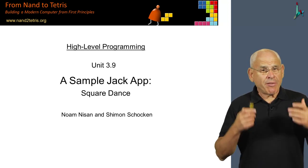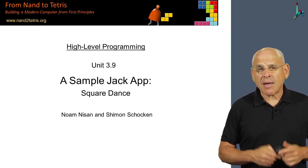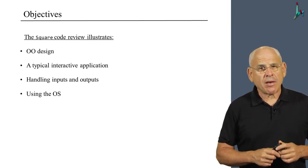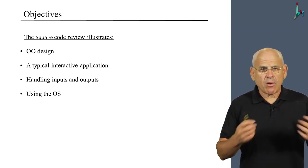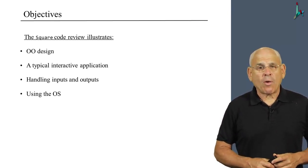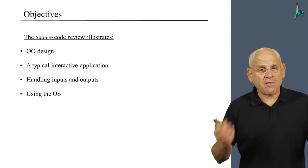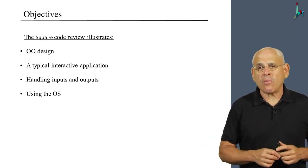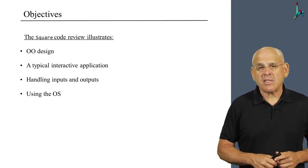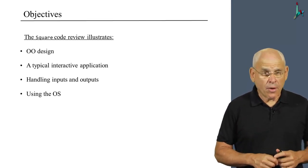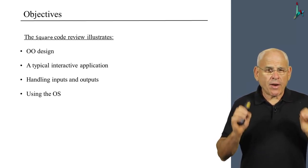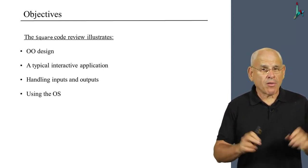The application that we've chosen to show you is something we call Square Dance. In showing you this particular program, we want to illustrate some notions of object-oriented design in Jack. We want to illustrate one way of developing interaction with the user using various input and output services supplied by the host operating system.